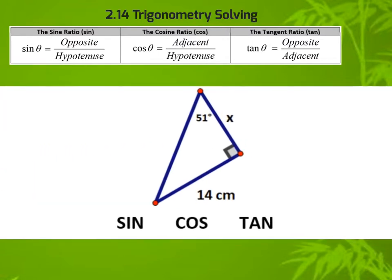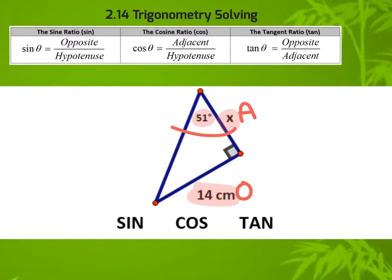Let's keep going. We mark our arc — this is the adjacent, this is the opposite — and again I have my angle involved. What do we know? We know the 14 and we want to know x. This becomes tangent, because we have the adjacent value 14 and we want to know x, and we have an angle. So this would be a tangent ratio.